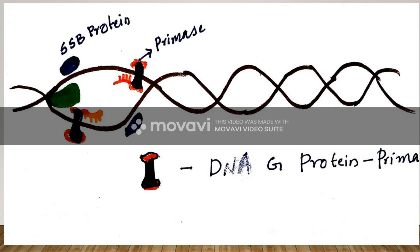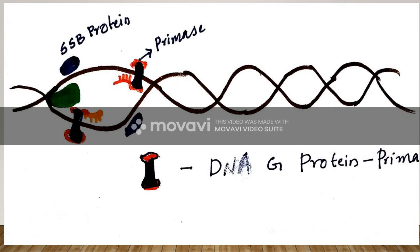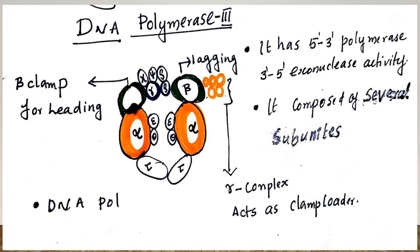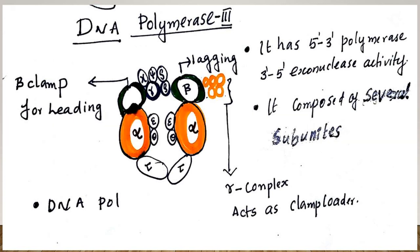The DNA helicase moves and breaks the hydrogen bonds, creating the replication bubble as seen in this picture. Then DNA Polymerase III comes — the main enzyme for replication. DNA Polymerase III consists of a beta clamp for loading the polymerase, along with the alpha, tau, epsilon, and theta subunits. The gamma complex acts as the clamp loader, and the beta clamp is also present.